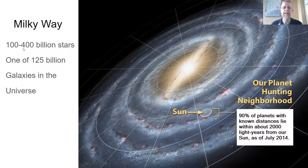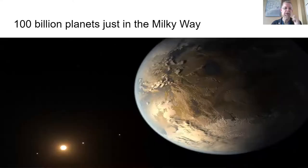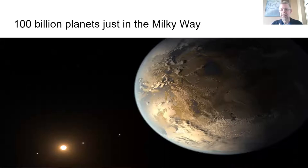Our galaxy is one of 125 billion galaxies in our universe, and we're trying to refine that number as well. So huge, huge distances — our galaxy is really big. There are 100 billion planets just in our Milky Way galaxy, not counting the other galaxies that we are studying and seeing if we can determine if there are planets orbiting those stars.